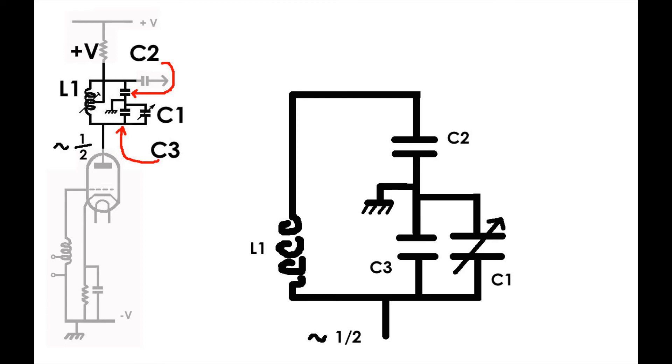And, yep, it's okay if we connect it to the positive rail. The DC can't go to ground, yet it can go down through the coil to the valve, and the whole thing is a tuned circuit.